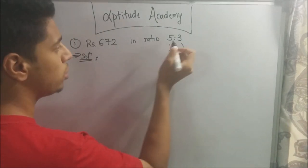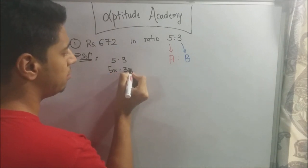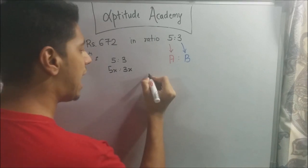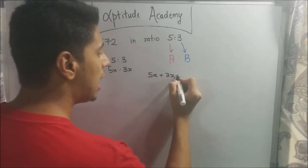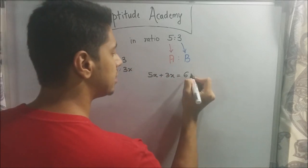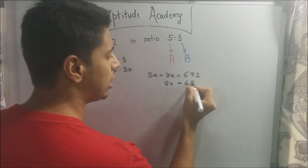So, when you are solving the sum, you will work backwards. Now you have 5 is to 3. So, 5x is to 3x. You can write this is the same thing. Now, if I add 5x and 3x, that is A's part and B's part, I should get 672 rupees. So, 5 plus 3 is 8x is equal to 672.